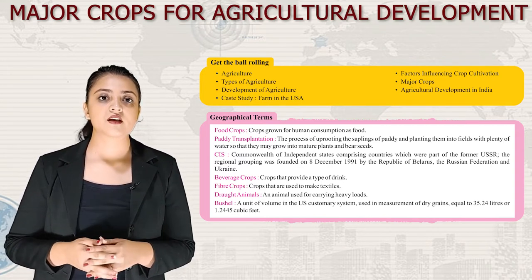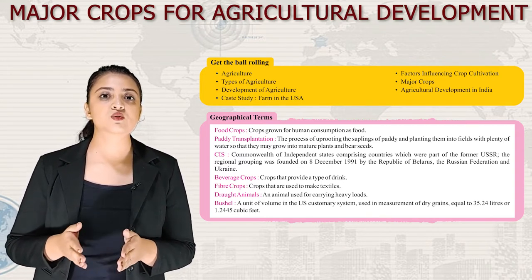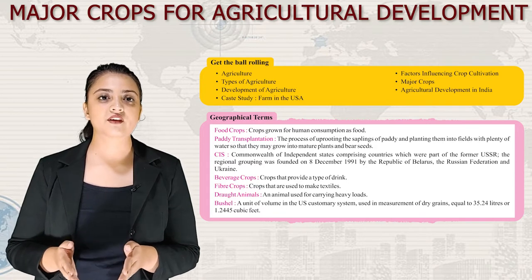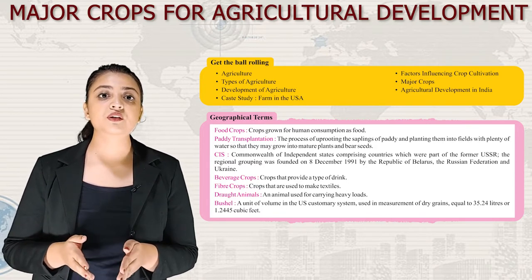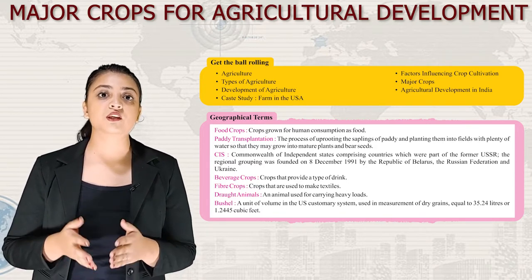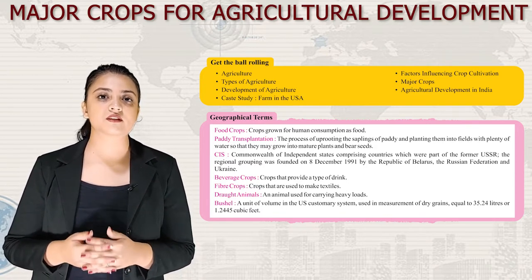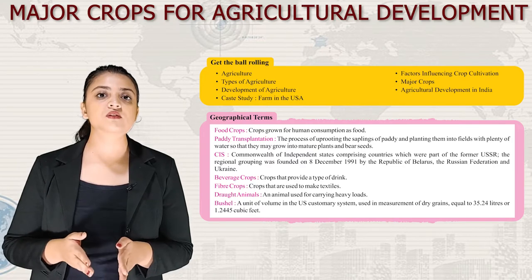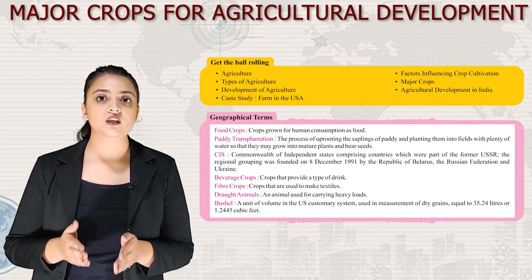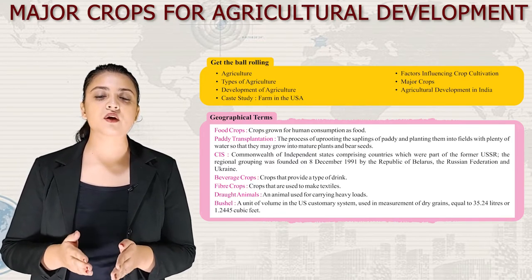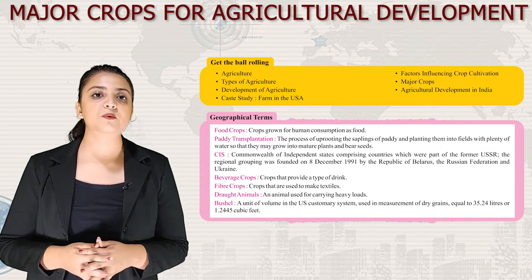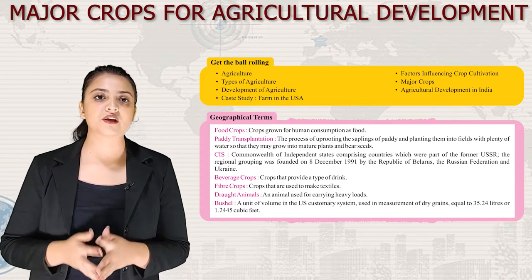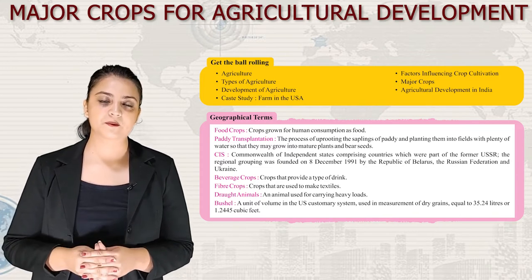Draft animals: Animals used for carrying heavy loads. A bushel is a unit of volume in the U.S. customary system used in the measurement of dry grains, equal to 35.24 liters or 1.2445 cubic feet.